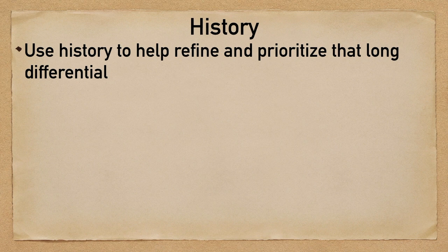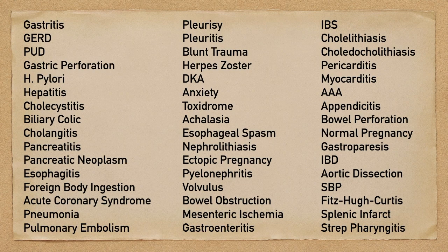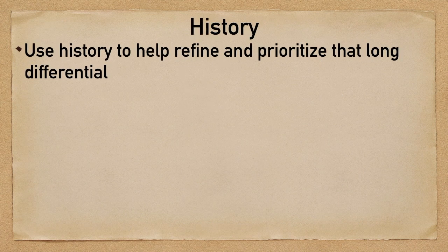You're going to use that history to refine and prioritize your differential. A lot of things can cause upper abdominal pain, so you're going to use that history to prioritize the more likely versus the less likely, and it's also going to help you figure out how you're going to work up the patient. When you obtain that history, I think it's always good to let the patient talk to you first. Don't ask too many questions, don't interrupt them — let them share their thoughts and feelings as to what's going on. Then afterwards, if you have more questions, feel free to ask them.